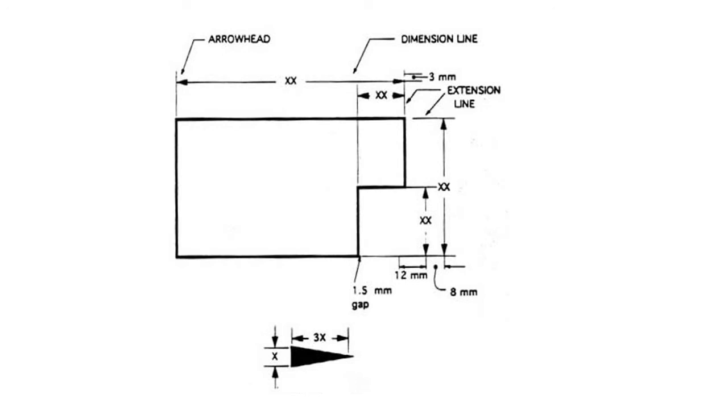Here's an example of a drawing of some sort. You can see that we've got extension lines, dimension lines. It's a block. We've got a lot of different stuff going on here. Just an example for you.